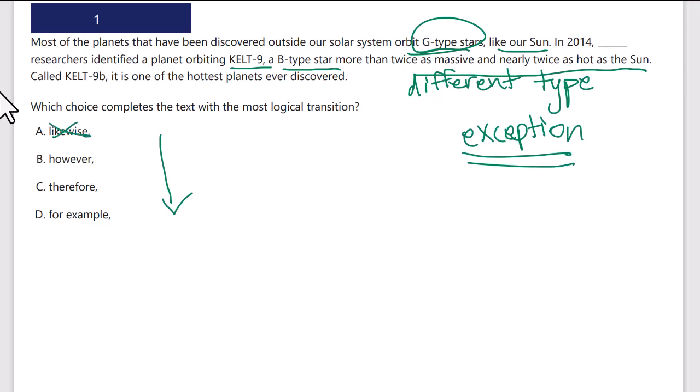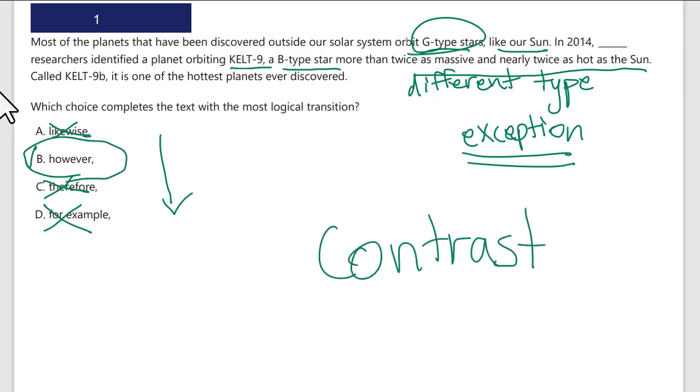'Likewise'? No, that's similarity. 'However'? Contrasting — yes, let's hold on to that. 'Therefore'? No, it's not a result of the previous sentence. 'For example'? No, a B-type star planet is not an example of a G-type star. So 'however' — contrasting. By the way, compare and contrast are two very different answer types with very different transition words. Comparison is 'likewise,' 'similarly.' Contrasting is 'however,' 'although,' 'nevertheless.' If the answer shows a difference — like John is taller than Bob — that's contrasting. If it says both John and Bob do well in school, that's comparison. Be very careful to differentiate comparison and contrasting transition words.